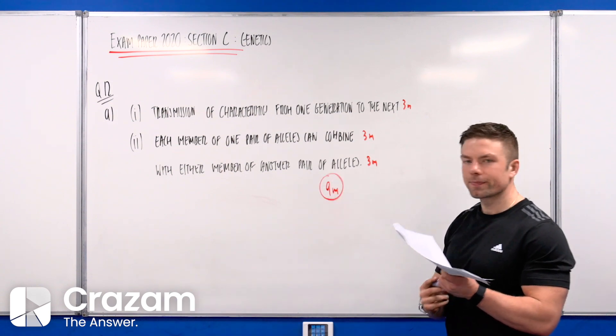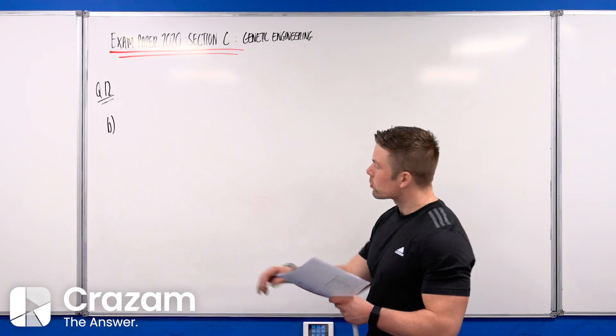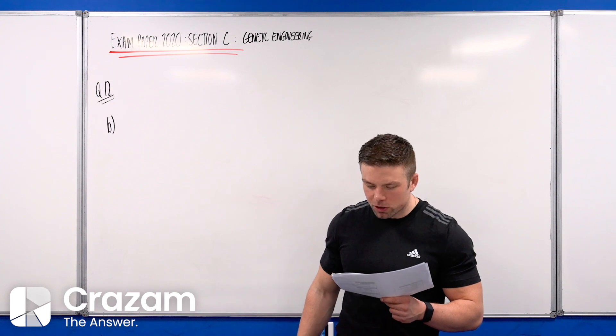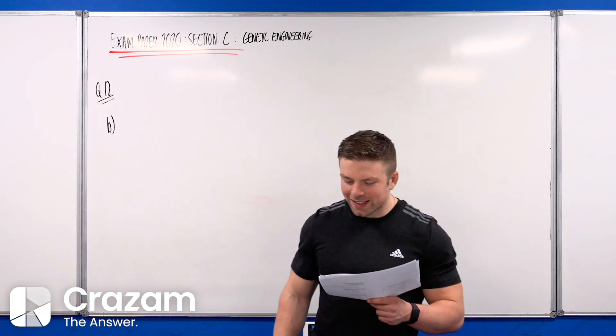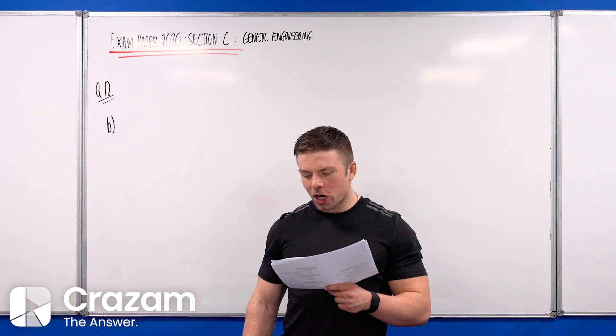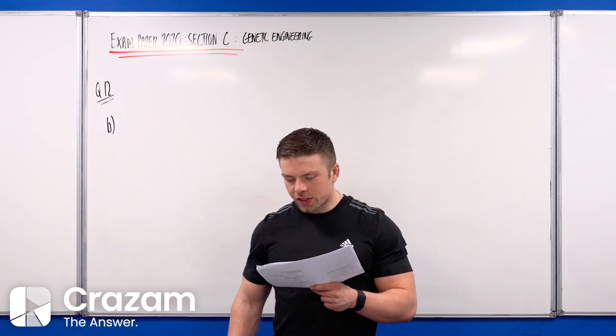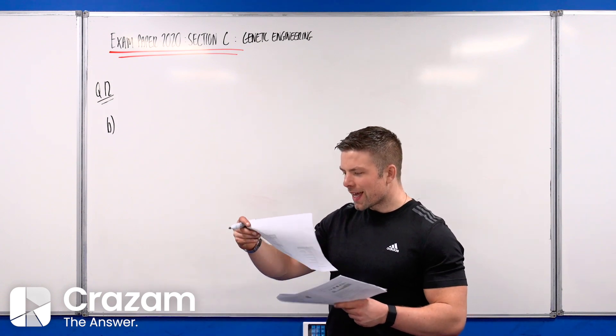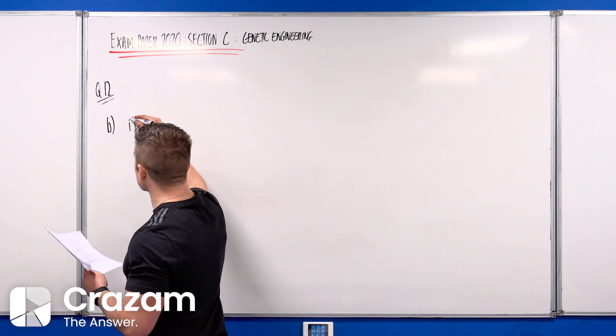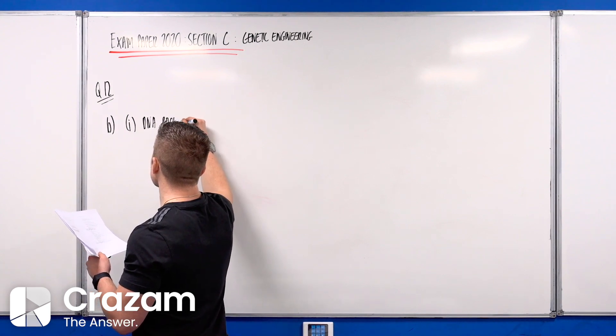This is the 2020 Section C question 12, genetic engineering question part B. It's worth 27 marks. The series of images represents the four main stages of the DNA profiling technique invented by Sir Alec Jeffries in 1984. Part 1: distinguish between DNA profiling and genetic screening.